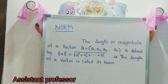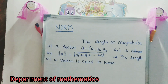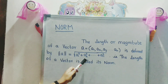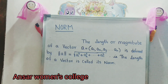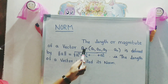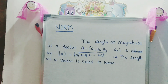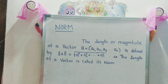The length or magnitude of a vector a = (a1, a2, ..., aN) is defined by: norm a = √(a1² + a2² + ... + aN²). That is, the length of a vector is called its norm.